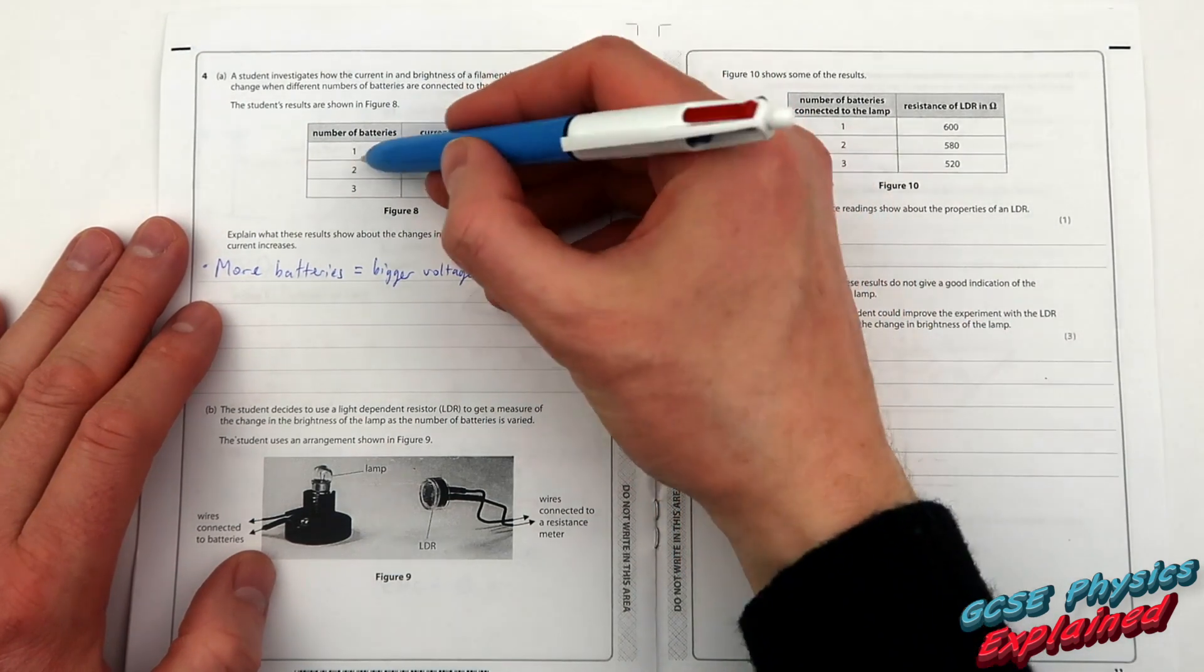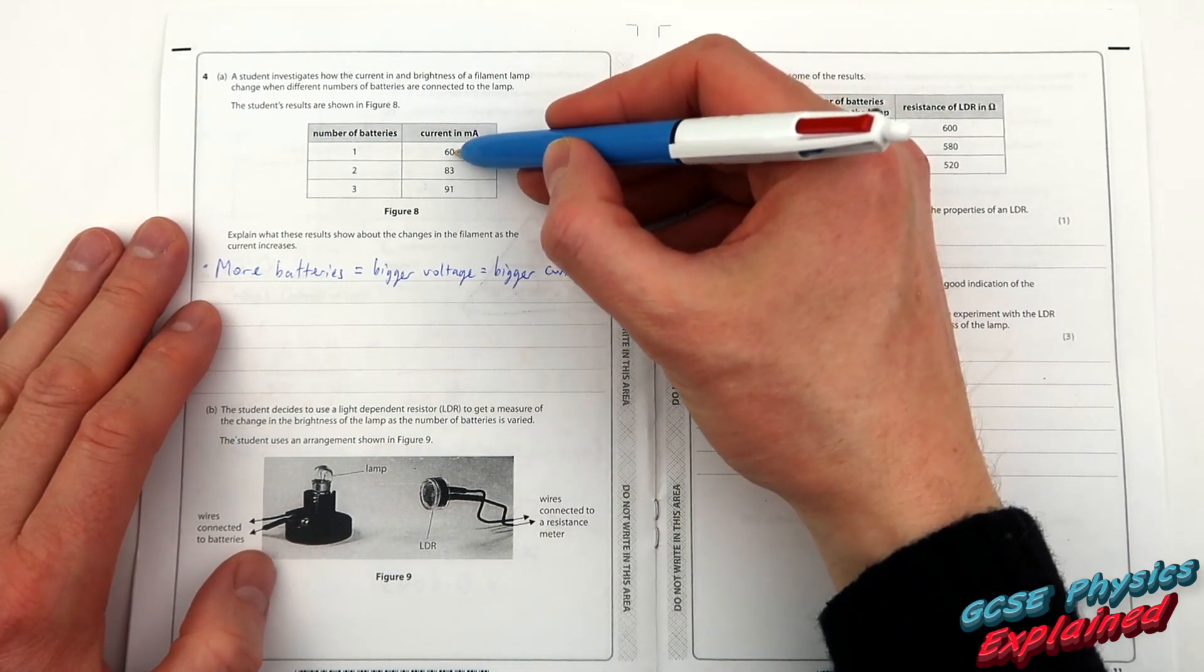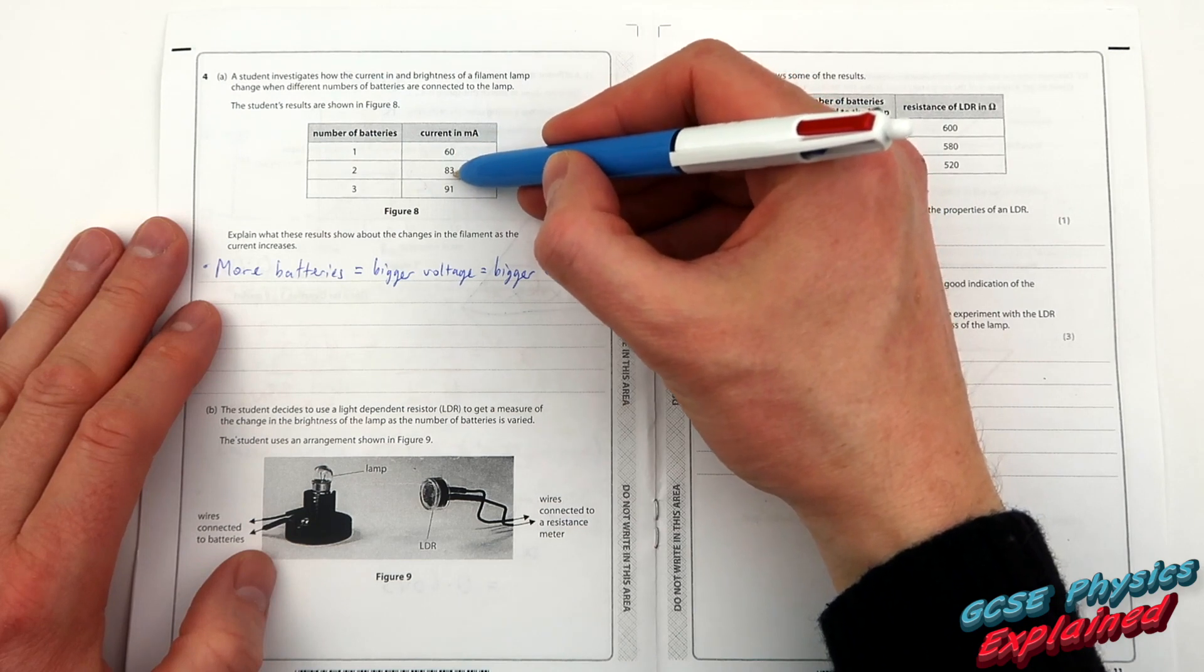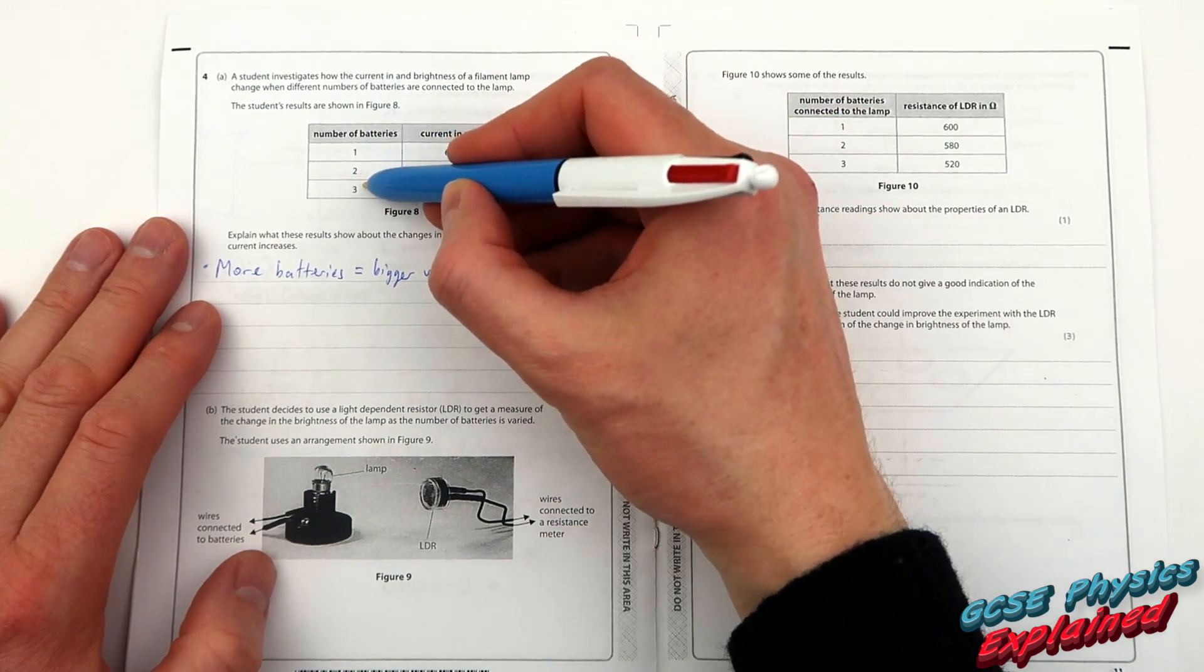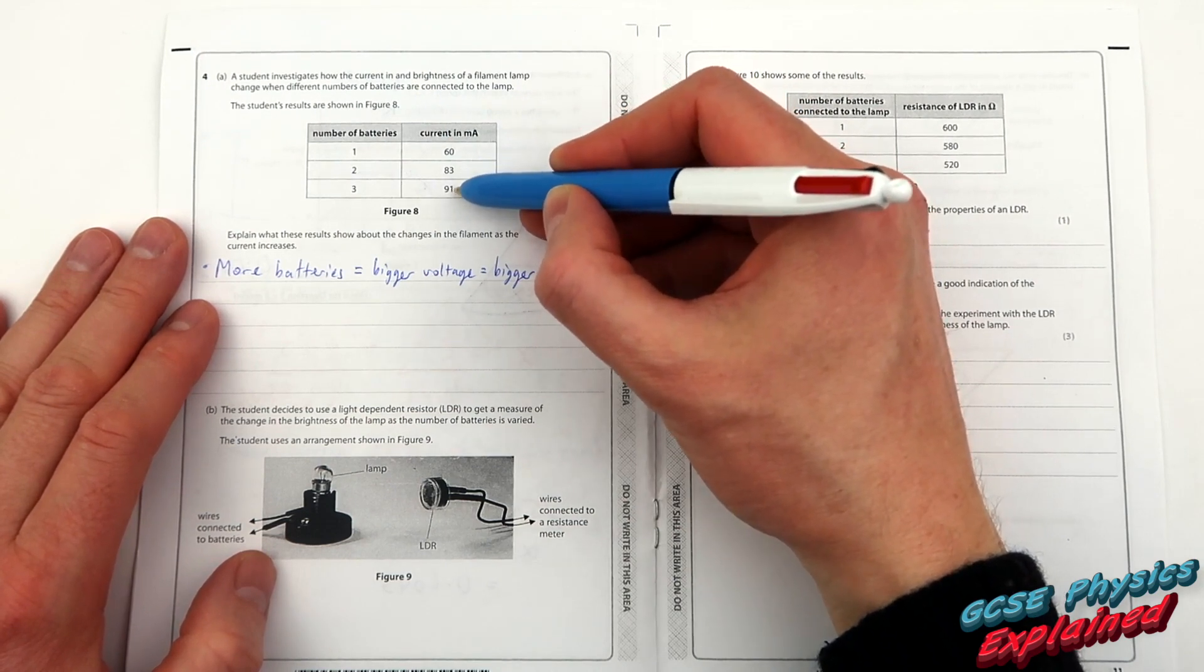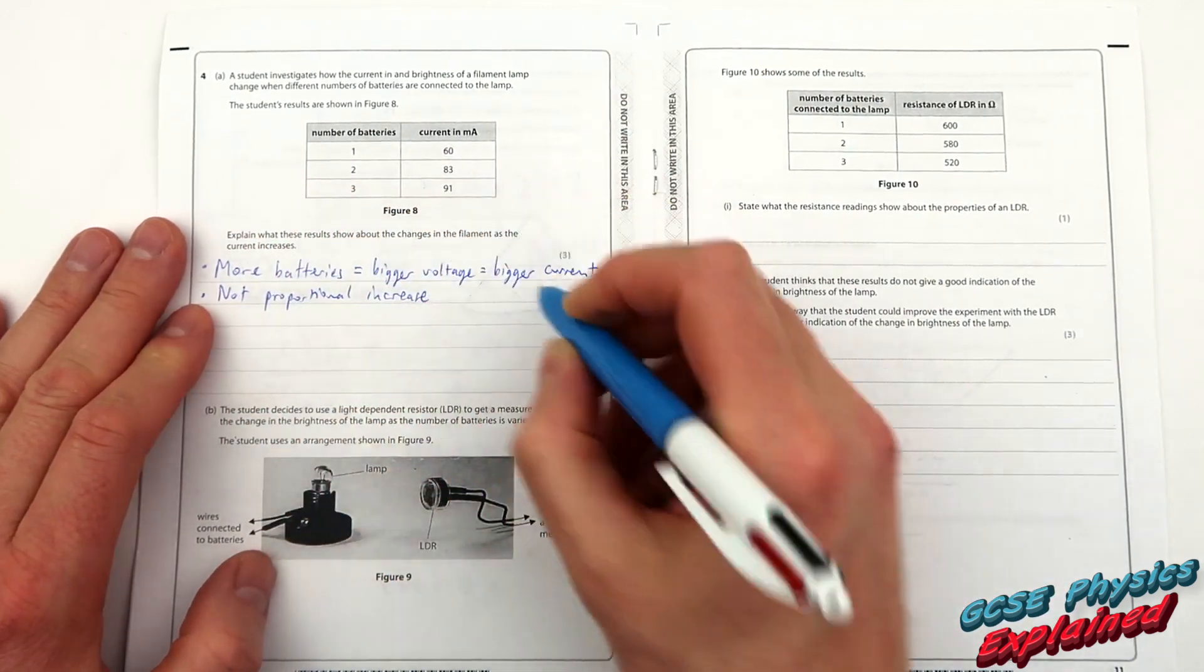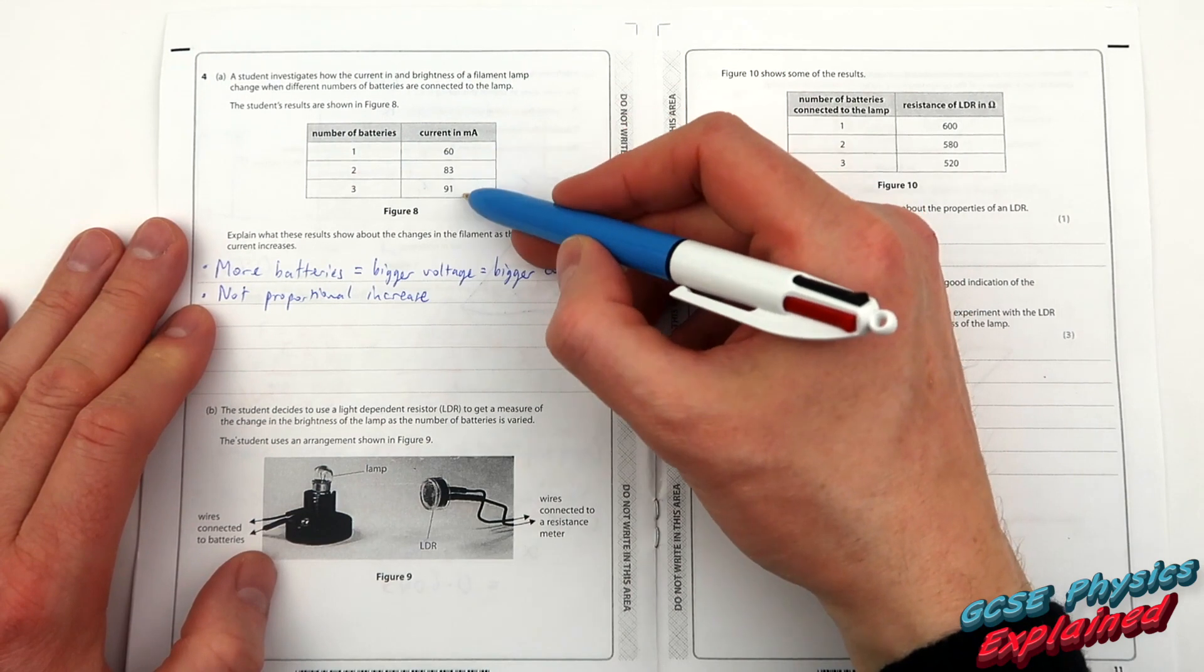Is it proportional? When the battery's increased by 1, the current is increased by 23 milliamps. And then when the battery's increased by 1 again, this time it only increases by 8 milliamps. So it's not proportional.